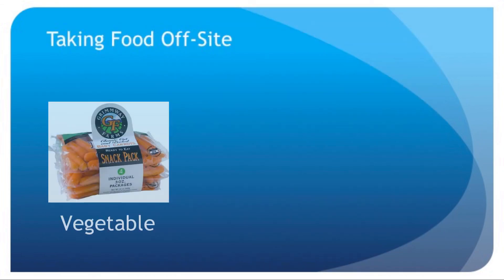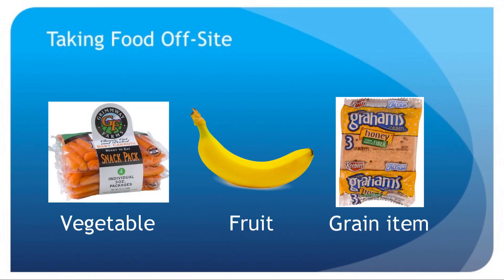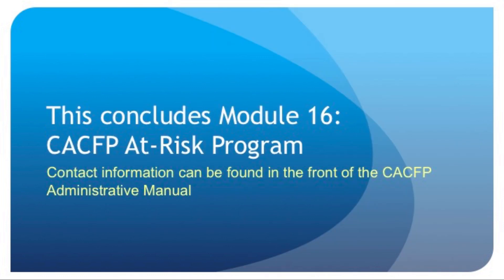Children may take one vegetable, fruit, or grain item from their own meal or snack or from a share table to eat off-site at a later time. This concludes the lesson on at-risk programs. If you have questions, contact the state agency or your area consultant. Contact information can be found in the front of the CACFP Administrative Manual.